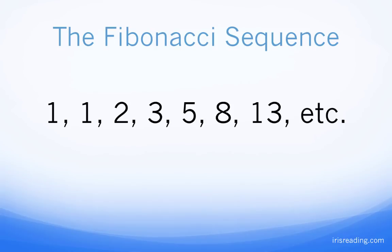Some of you are probably familiar with the Fibonacci sequence. Basically, it's a sequence of numbers where the first two numbers give you the next one. So 1 and 1 gives you 2, 1 plus 2 equals 3, 2 plus 3 equals 5, 3 plus 5 equals 8, and so on and so forth. That's a Fibonacci sequence.